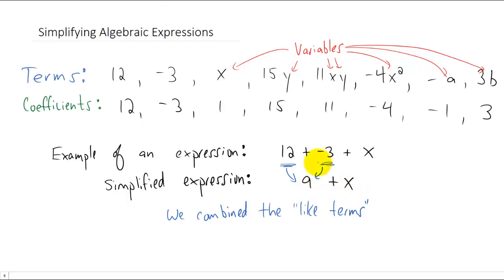The only terms you can combine are the like terms, and two terms are called like terms only if they have the same variables raised to the same powers. Let me explain that a little bit better with a couple of examples.